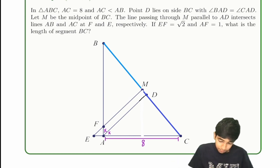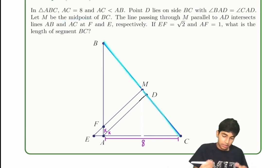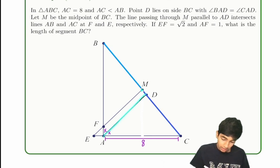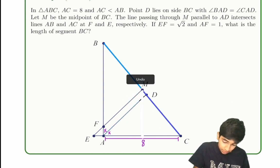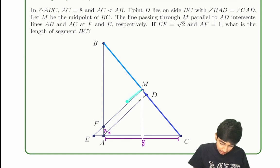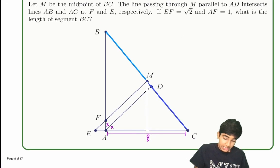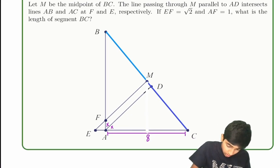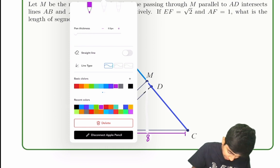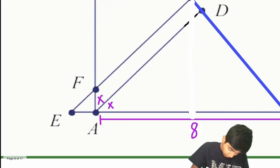M is the midpoint of BC, so BM equals MC. The line passing through M parallel to AD intersects line AB at point F and line AC at point E, like this. EF is root 2, so this segment here is root 2.